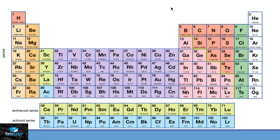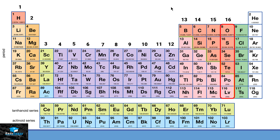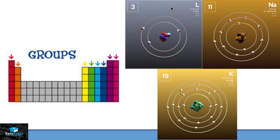If we look at this table vertically, we can see many different types of columns. We have 18 different columns, and these columns are called groups. Group means that all elements present in that specific group will have the same number of electrons in their valence shell.